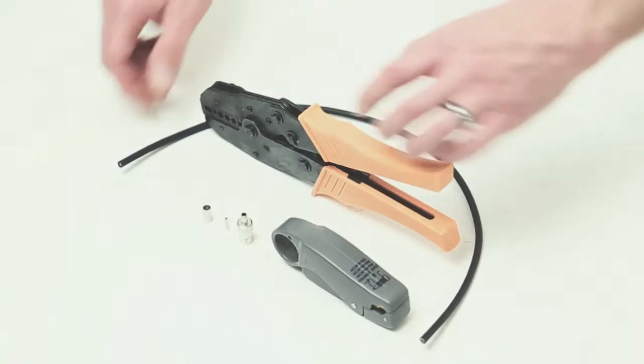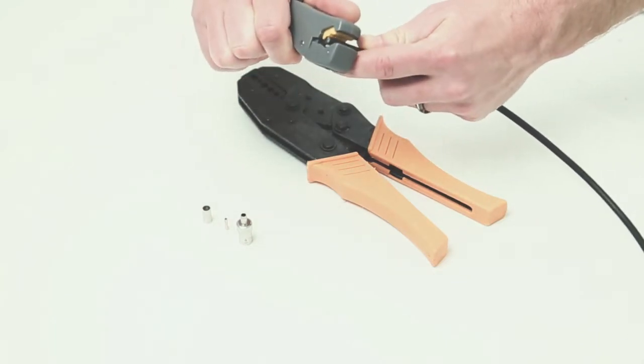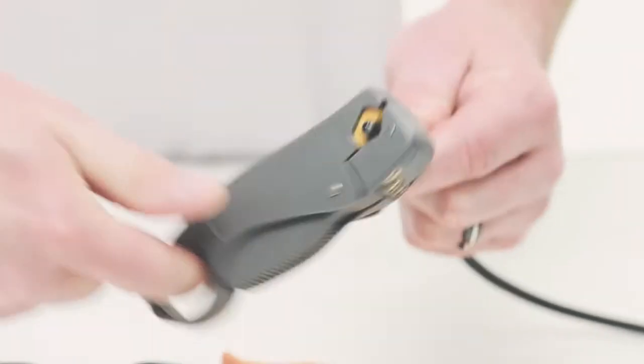To begin, take your strip tool and remove the outer jacket and dielectric of the cable. Simply rotate the stripping tool around the outside of the jacket.